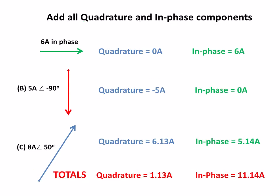If we look at all the components of the three phasors, there's our 6 amps in phase, our minus 5 amps, and our two components of the 50 degrees. What we're going to do is add up all the quadrature components and add up all the in-phase. So the quadrature we've got 0 minus 5 plus 6.13 which gives us 1.13 amps. And the in-phase we've got 6 plus 0 plus 5.14 to give us 11.14 amps.